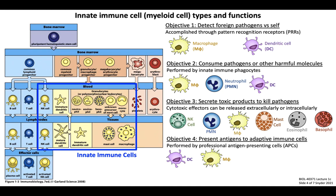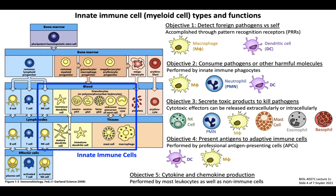Objective number four is to present antigens from pathogens to stimulate certain types of adaptive immune cells. An antigen is just a piece of protein derived from a pathogen. This function is carried out by professional antigen-presenting cells, or APCs — dendritic cells are often viewed as the most effective type of APC, but macrophages can also present antigen from phagocytosed pathogens. Objective number five is the production of cytokines and chemokines, generally secreted by most leukocytes once activated, and also by non-immune cell types. Cytokines profoundly affect activation of neighboring immune cells, while chemokines are involved in the recruitment and migration of immune cells throughout the body.